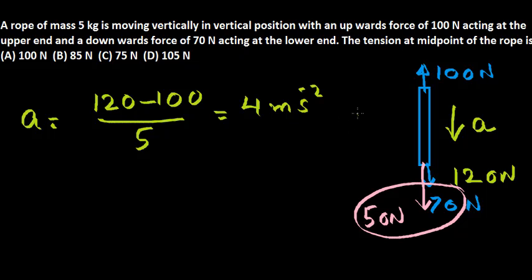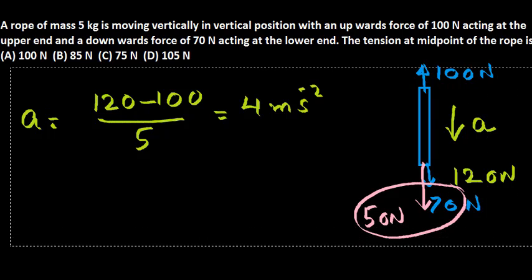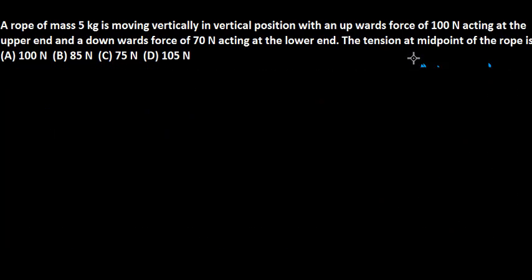Now what is asking? What is the tension at the midpoint? For this what we do is, we will consider the rope to be of two parts, two equal parts. So each part will have mass 2.5. Assume that this is the upper part and this is the lower part.